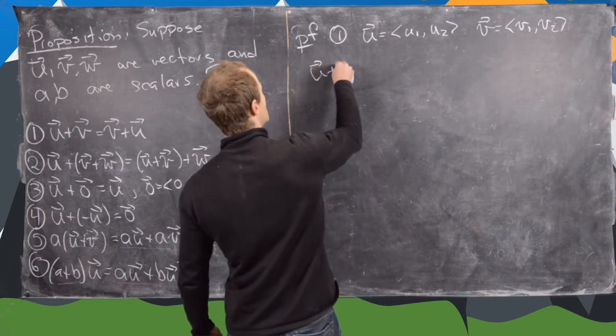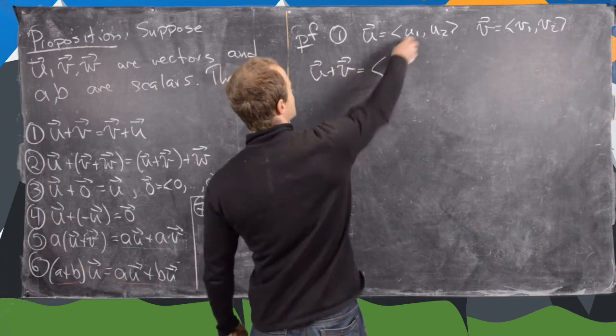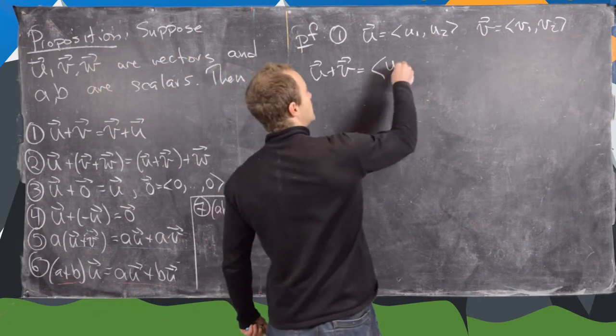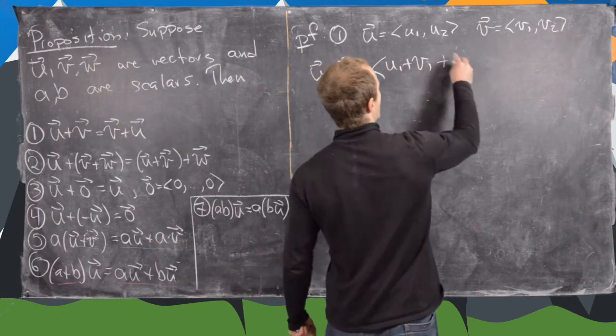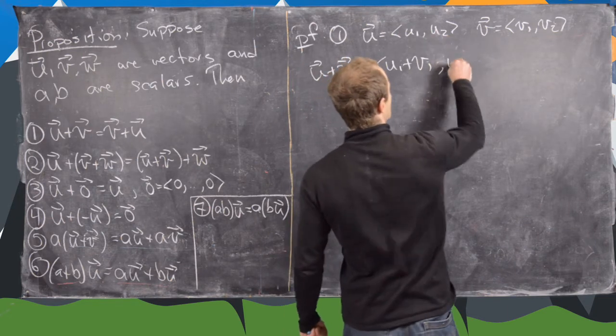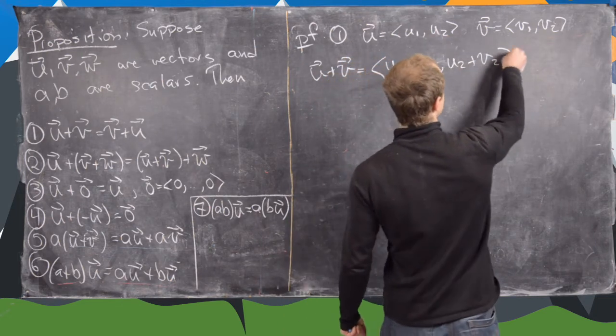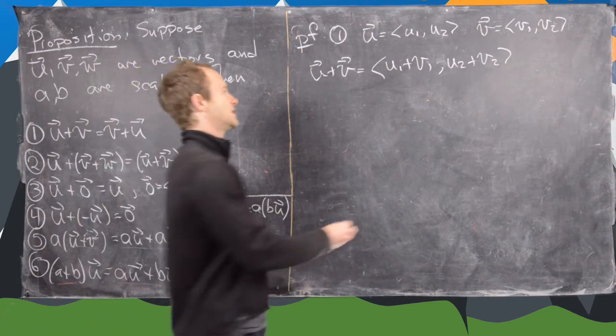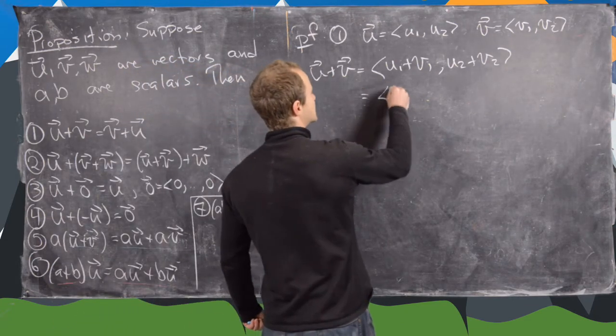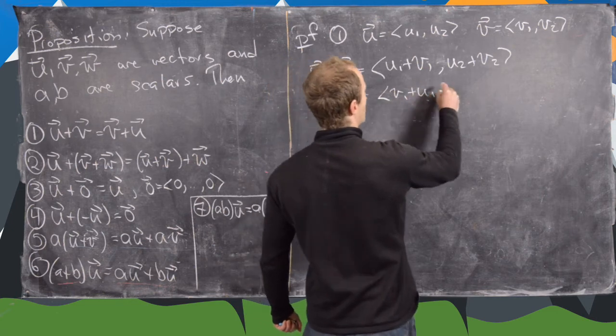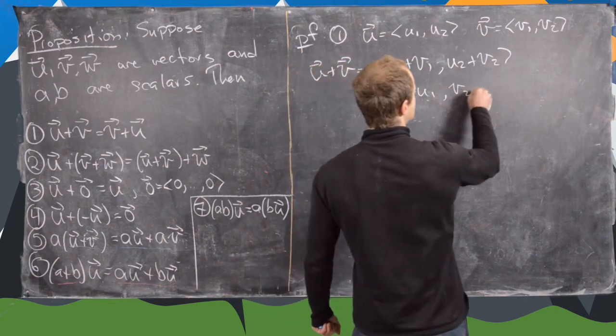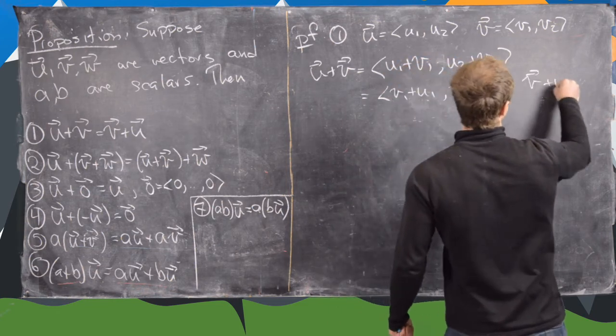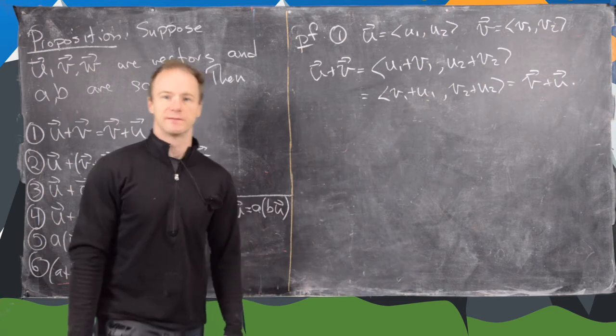And notice that u plus v using this representation of u and v will be (u1 + v1, u2 + v2). But now we know that the addition of numbers is commutative. So that's going to give us (v1 + u1, v2 + u2). But that's exactly v plus u.